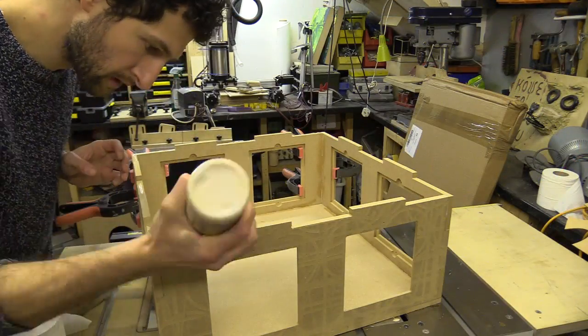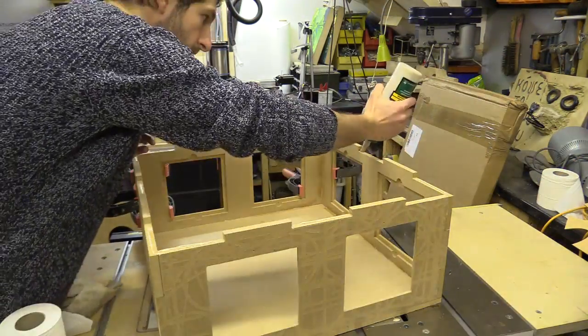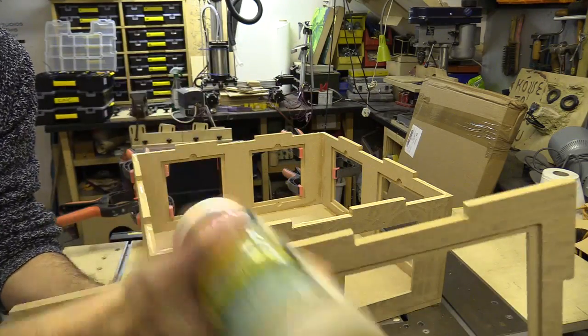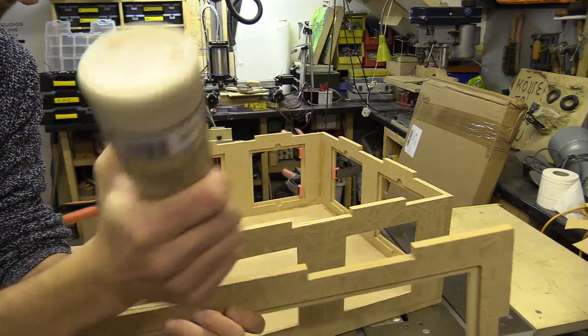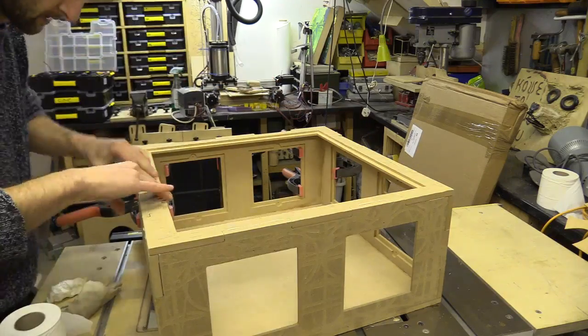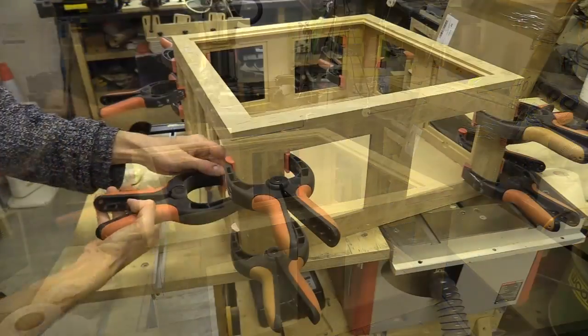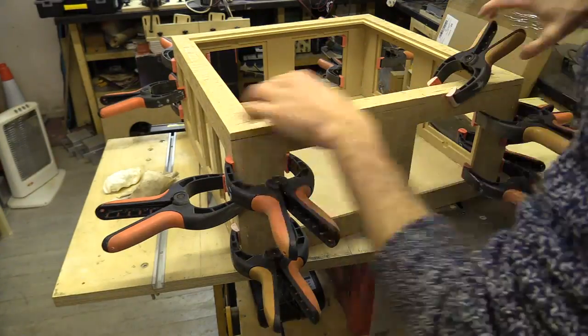I decided to glue the box together and will give it a few coats of varnish once it's dry, and also spray it with a flame retardant liquid just in case. I used a slower setting glue while assembling the panels, which gave me plenty of time to secure everything with almost 80% of my clamps.